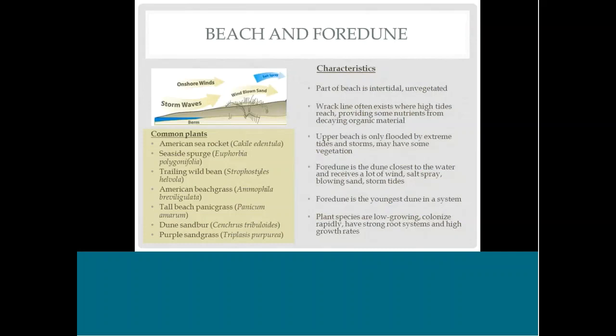Starting closest to the ocean: the beach. Parts of the beach are intertidal — more of it is covered at high tide and exposed at low tide, and those areas are usually devoid of plants. You can usually tell where the normal high tide line hits based on where the wrack line is — a band of deposited plant material. Above that normal high tide line is where you might start to see some plant growth extending up into the foredune.